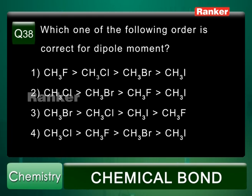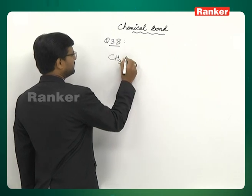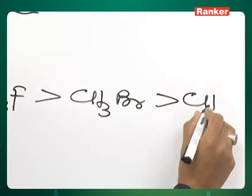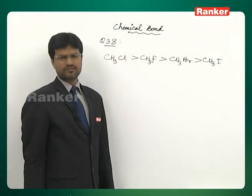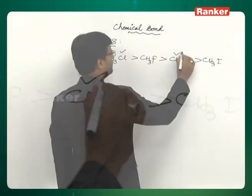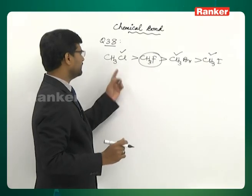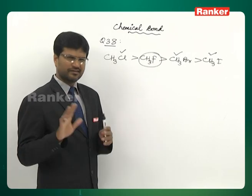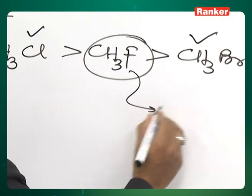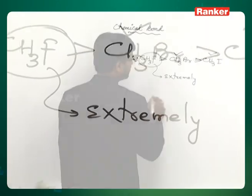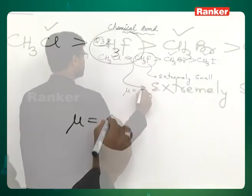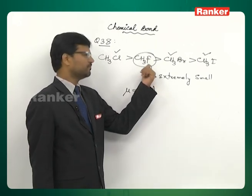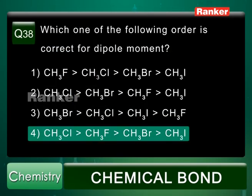Question number 38: Which order is correct for dipole moment? The order is CH3Cl > CH3F > CH3Br > CH3I (given in the fourth option). Going from Cl to Br to I, electronegativity decreases so dipole moment decreases. The anomaly is that CH3F < CH3Cl: due to the extremely small size of fluorine, the C–F bond distance is very short, reducing the dipole moment below that of methyl chloride. Answer is the fourth option.